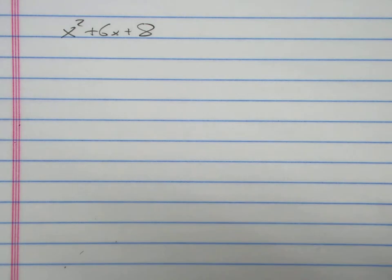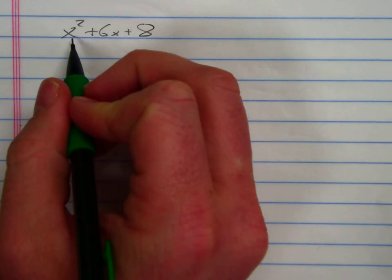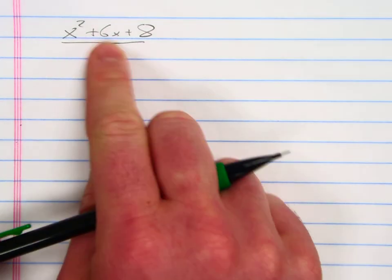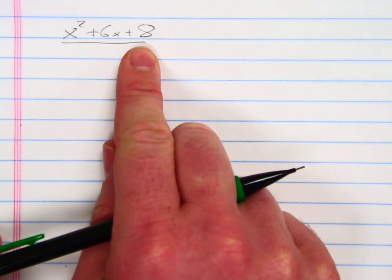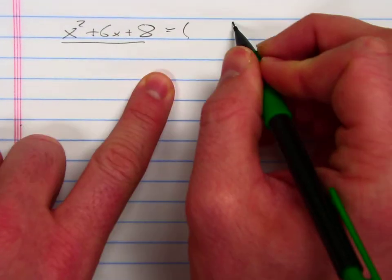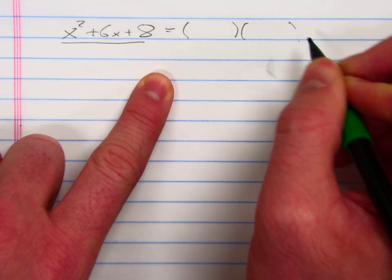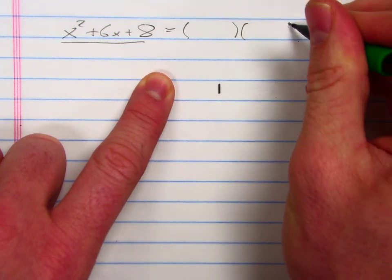Here's a video about how to factor polynomials using the box method. If I'm trying to find the factors of x squared plus 6x plus 8, that means I want to find out what are the two binomials that I multiply together to make this trinomial.